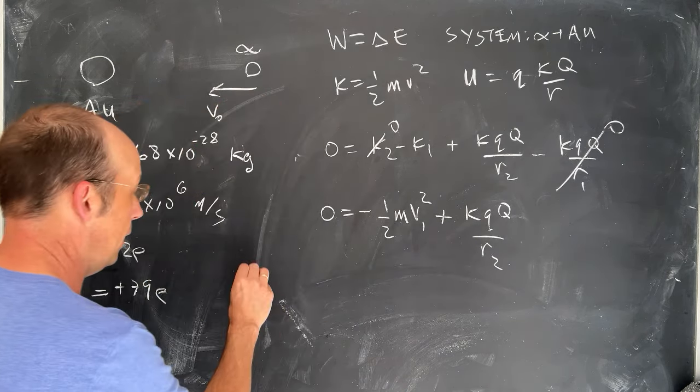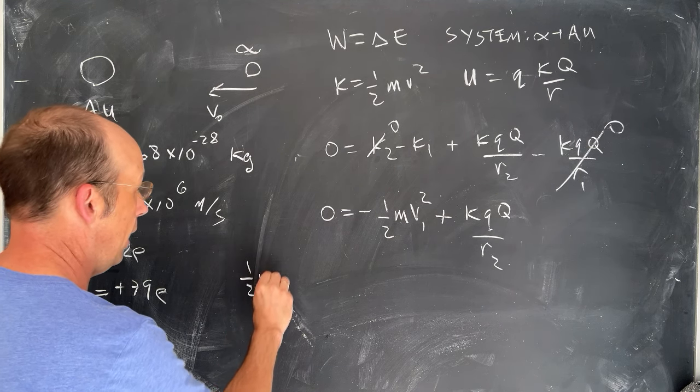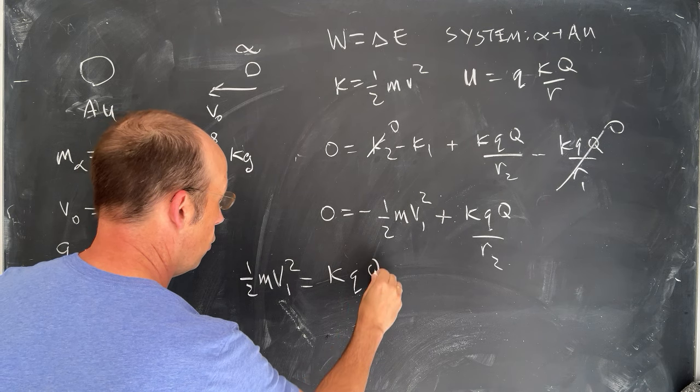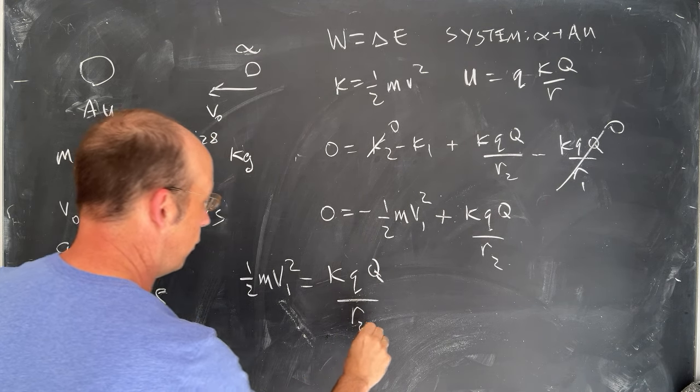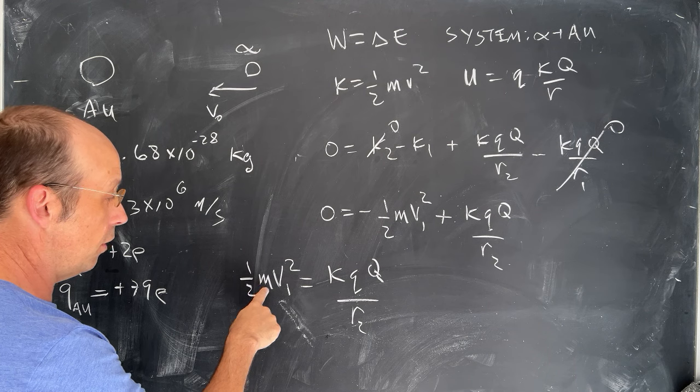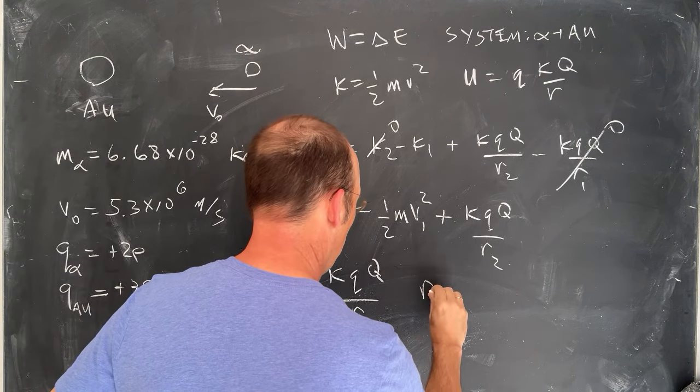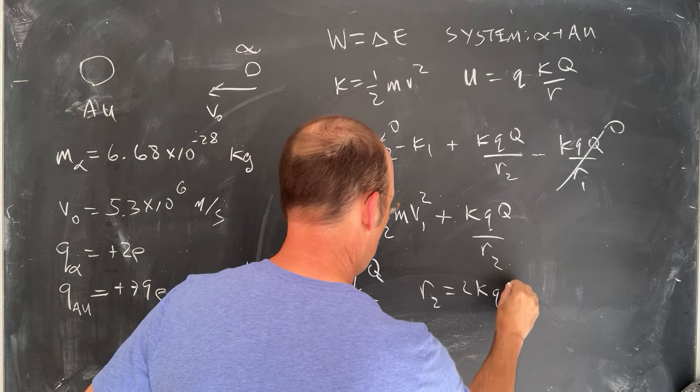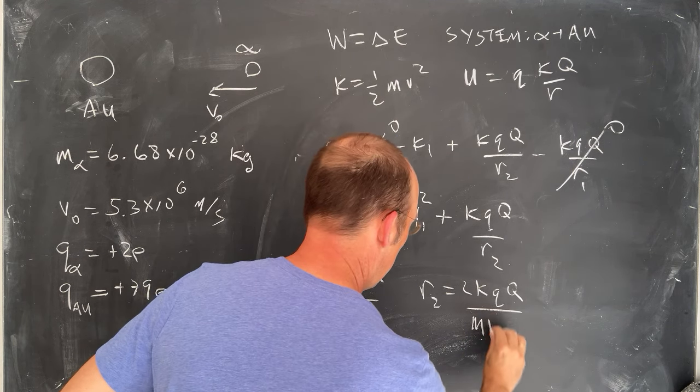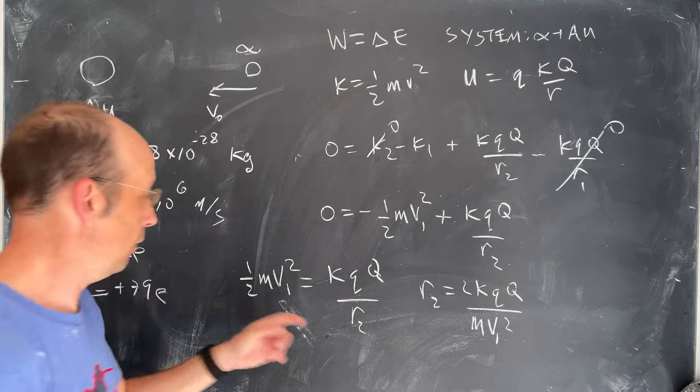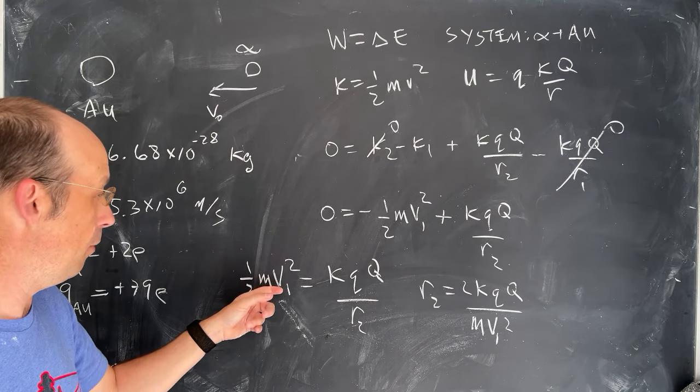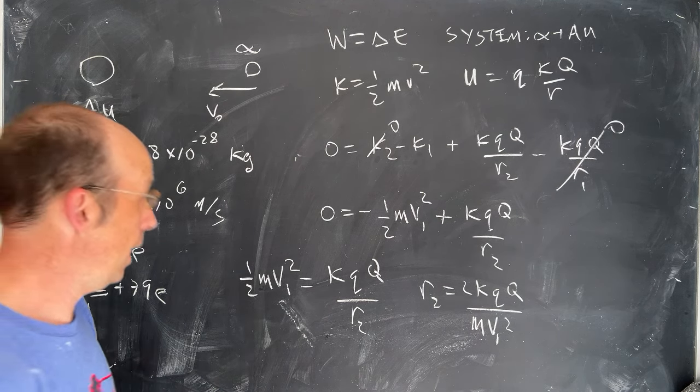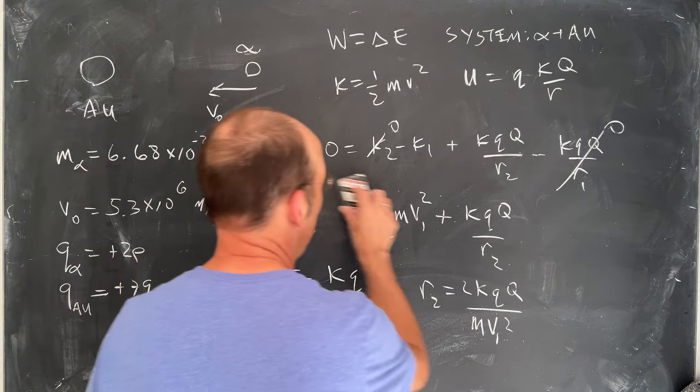I'm going to add that to both sides. I get one-half m V1 squared equals KQQ over R2. Now I can multiply both sides by R2 and divide by this and I get R2, it's going to be equal to 2KQQ over M V1 squared. Alright, so if I multiply that up here and then I divide by M1 V1 squared, I multiply by 2, I get that. Let's go ahead and put in our values and we'll be done.